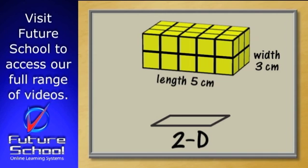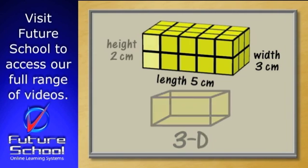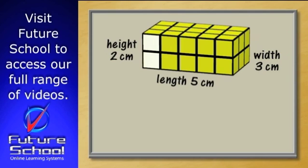The height is what we were measuring when we counted the layers upwards. Because we built the shape from centimeter cubes, we know that each cube side measures one centimeter, so the height of the solid is two centimeters.